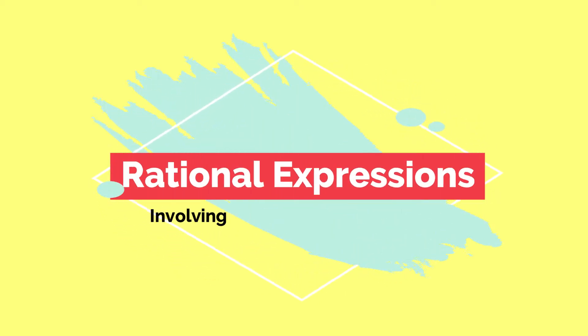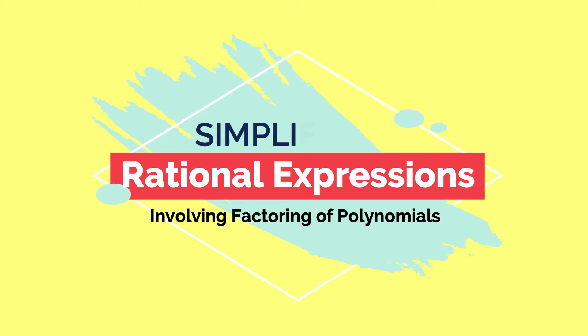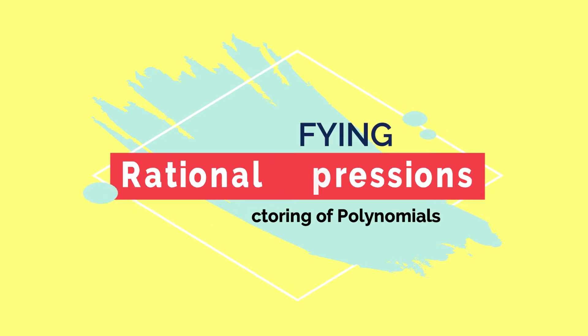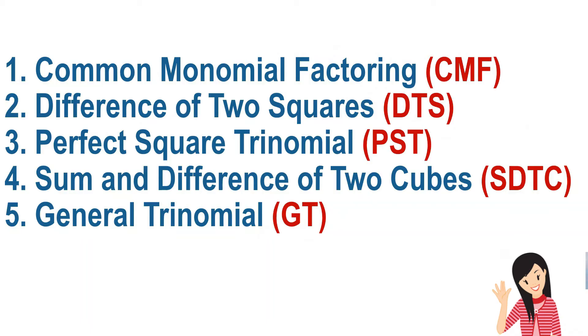Our topic for today is about simplifying rational expressions involving factoring of polynomials. Before that, we have to recall first the different factoring methods that we have discussed. We have five different factoring methods: common monomial factoring, difference of two squares, perfect square trinomial, sum and difference of two cubes, and general trinomial.